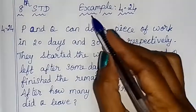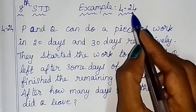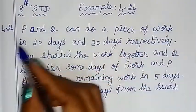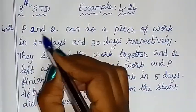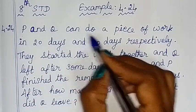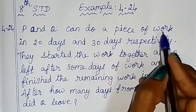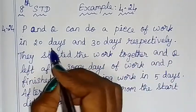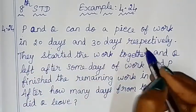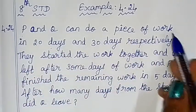Hello children, I will show you example 4.24. P and Q can do a piece of work in 20 days and 30 days respectively.